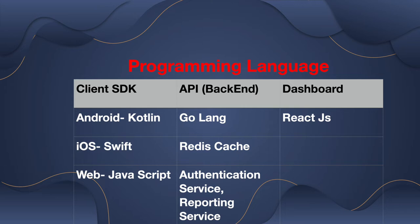The client SDK is meant to catch crashes — whenever a crash happens, it will send it to the server. This client SDK will be used as a library in the respective environment. For the API, we have considered Golang as the programming language for the API server.